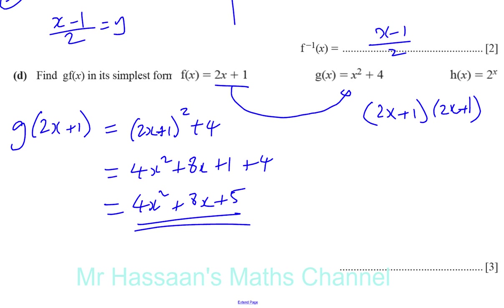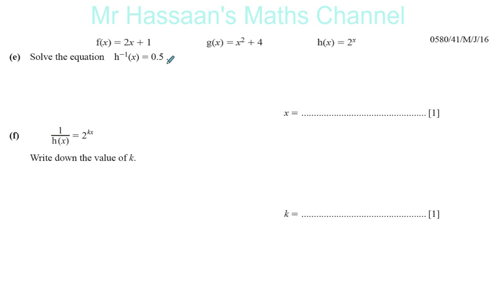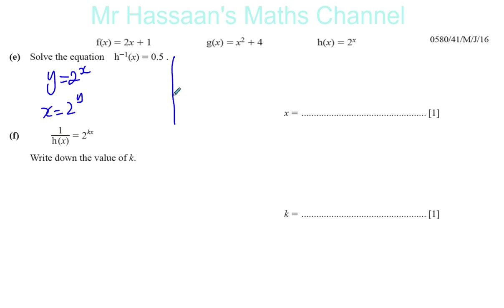Moving on to the next page. Part e says solve the equation: inverse of h(x) equals 0.5. Now h(x) equals 2 to the power of x. There would be two ways of doing this if we knew how to find the inverse of this function. However, making x the subject from 2 to the power of y requires further knowledge not required at IGCSE. So there's another way they expect you to answer this, which is very important — please pay attention because you may get a question like this.